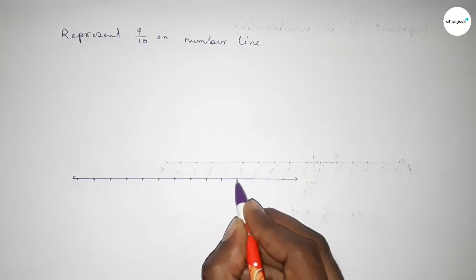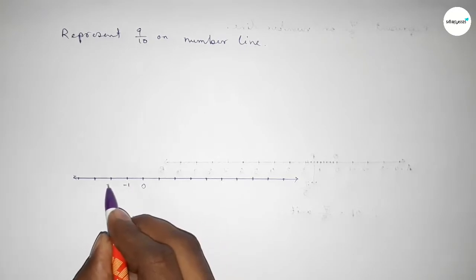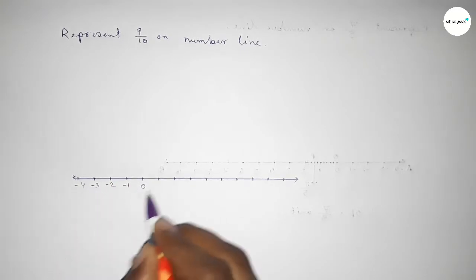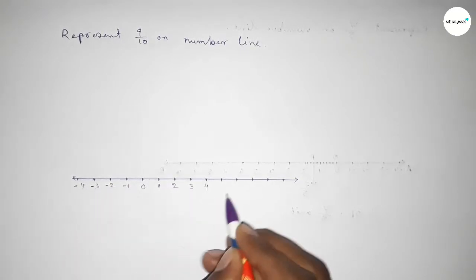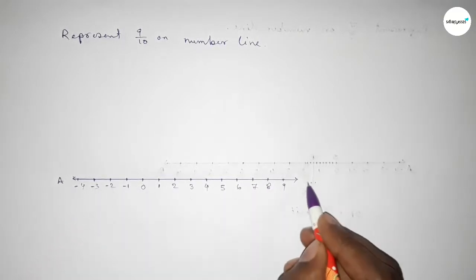So first, drawing here a number line and taking here the starting number zero. This side: minus 1, minus 2, minus 3, minus 4. And this side: 1, 2, 3, 4, 5, 6, 7, 8, 9. And this is a number line.